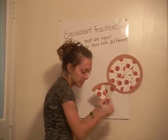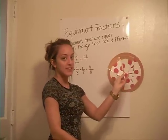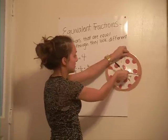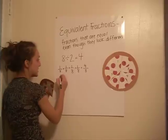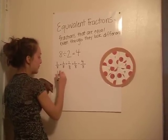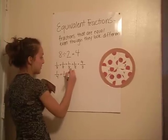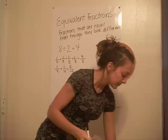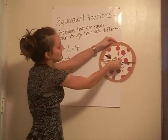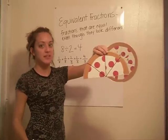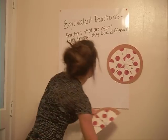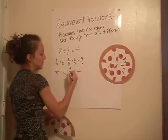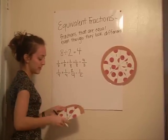Think back to what we just experimented with. Two one-eighths is equal to one fourth. And one fourth plus one fourth gives us two fourths. Two fourths looks like it's the same amount as one half of the pizza. So if we simplify two fourths — two goes into itself once, and two goes into four two times — we get one half.